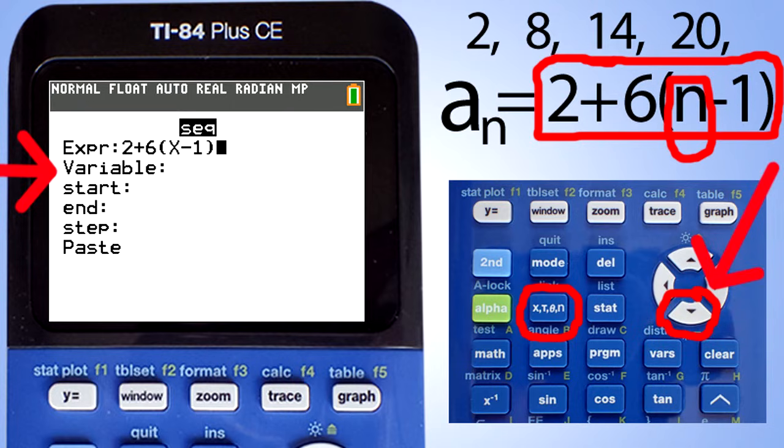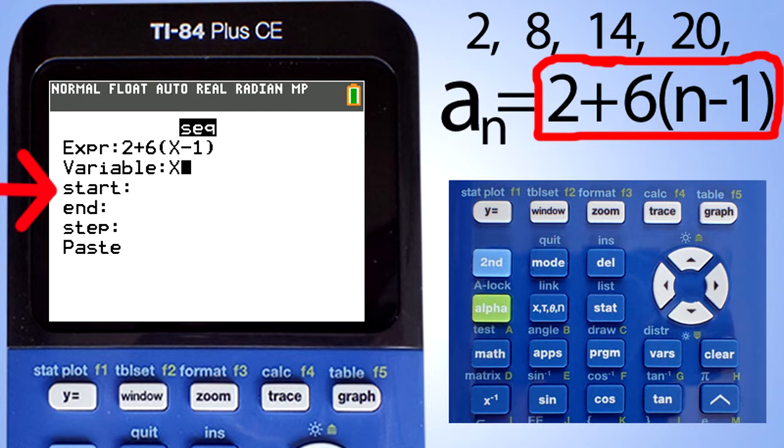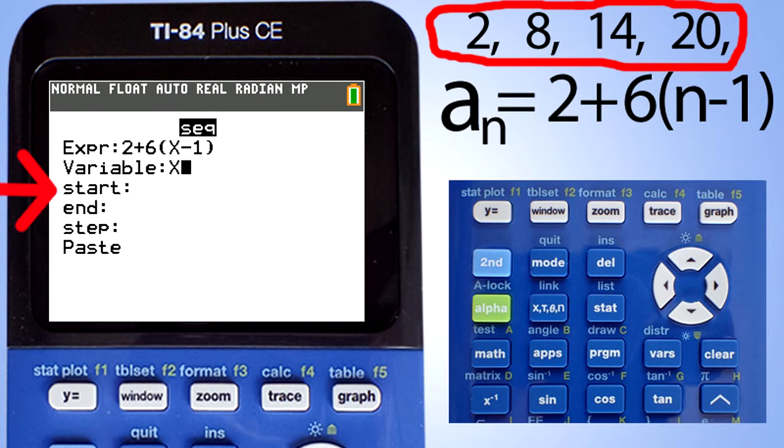Go down to the next line by pressing the down arrow key here. The variable that we are using is the x. So enter x by pressing this button here. Go down to the next line, start. The start and end are the beginning term and the ending term you want to calculate and display. For example, let us calculate a sub 1 to a sub 4, which are these numbers here, the first four terms of our sequence. So for start, we will enter 1, and for end, we will enter 4.